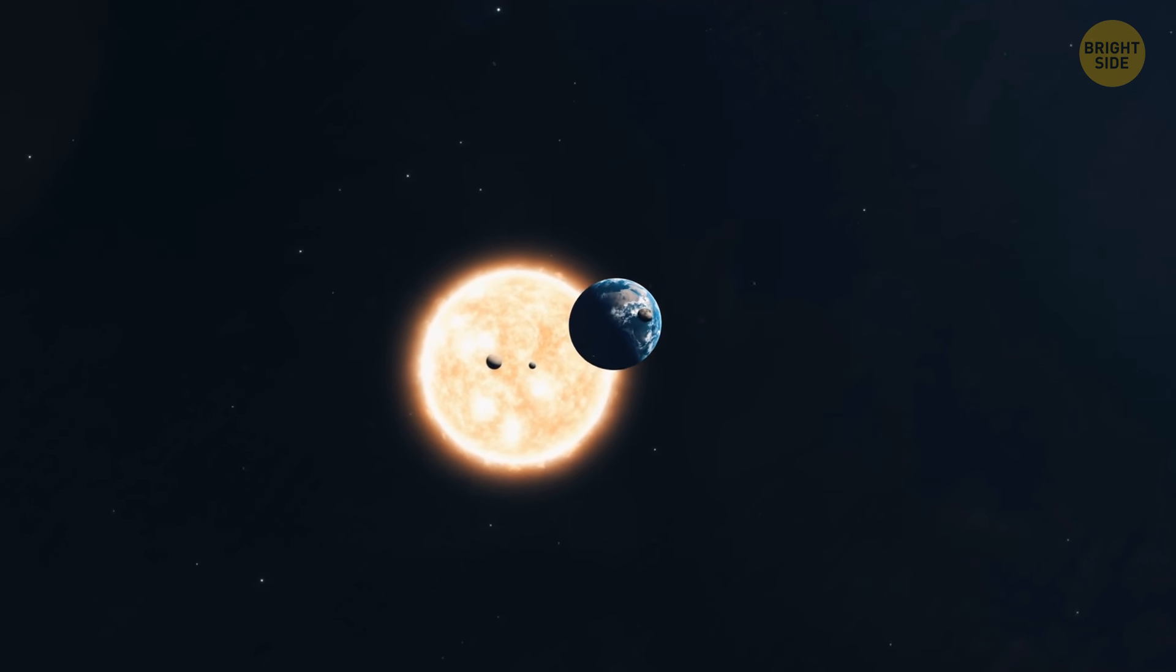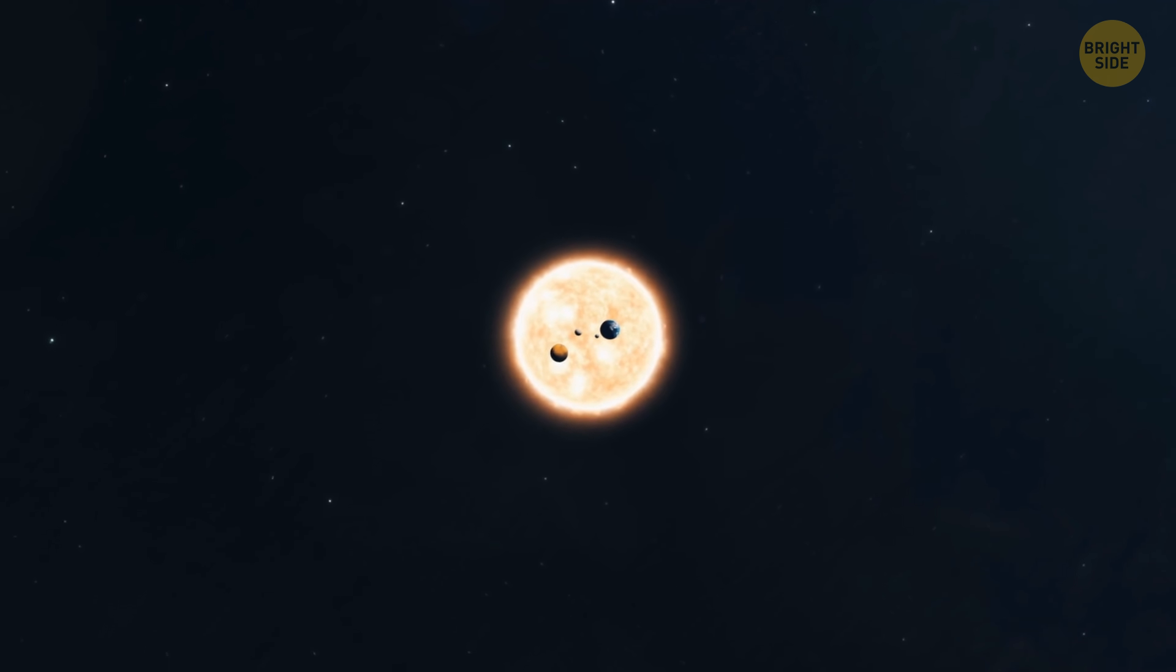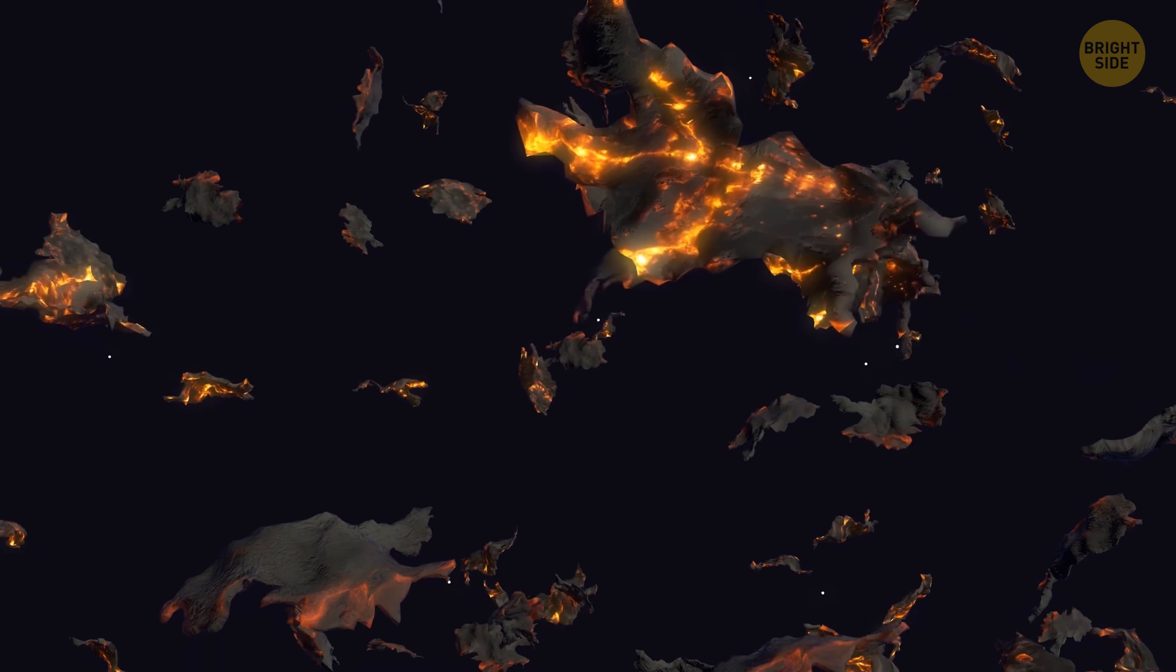But the sun's grand finale just doesn't mess with Earth. It wreaks havoc on the entire solar system. That massive burst of energy would be crashing into everything in its path. Planets and other objects get knocked off of their cozy orbits, causing chaos and unpredictability.